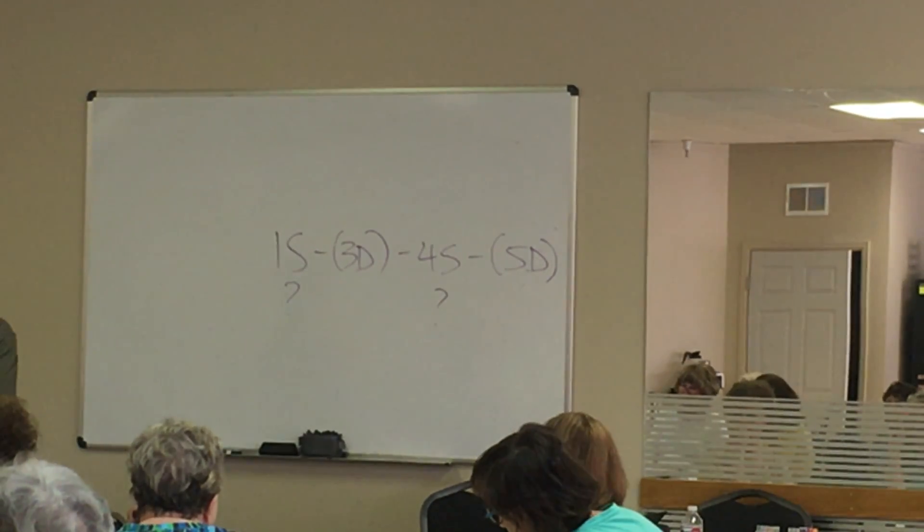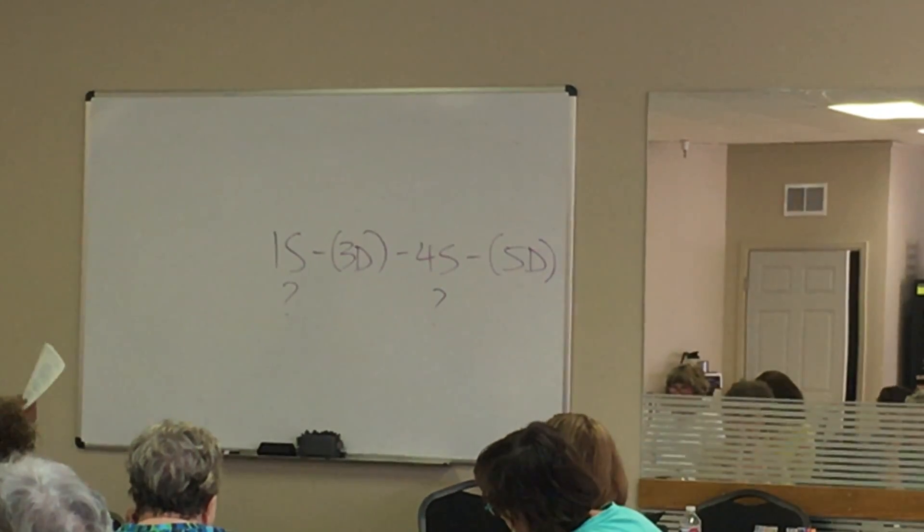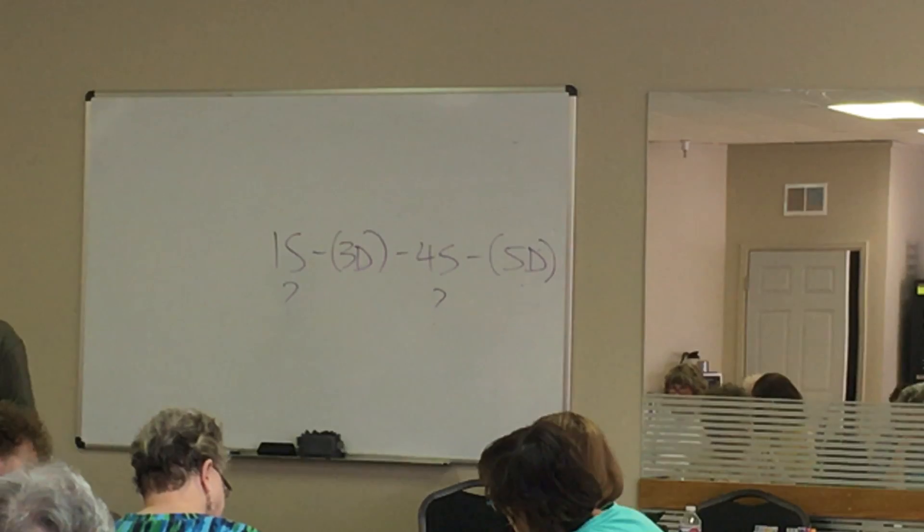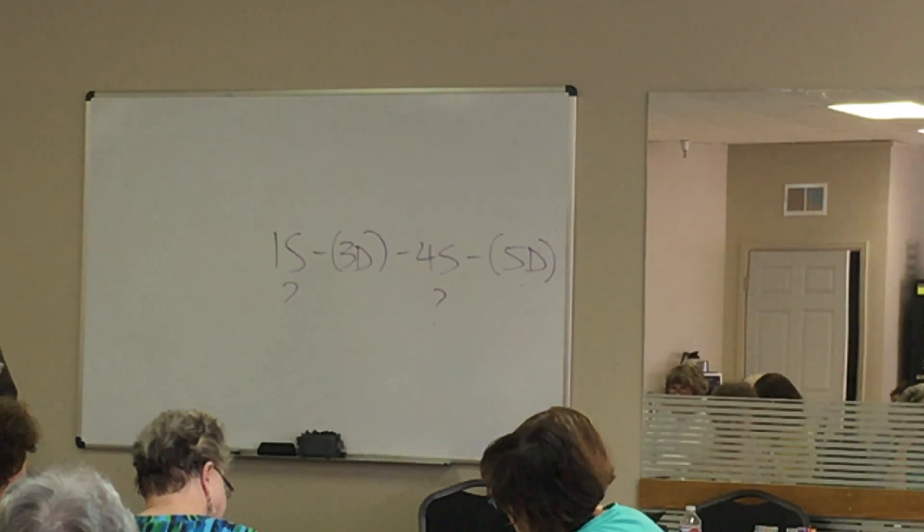We bid four spades intending to make it, and now they outbid us because they were at favorable vulnerability, and they were prepared, even if we double them, to play five diamonds and figure that the penalty is going to be less costly than letting us play four spades and presumably make it.